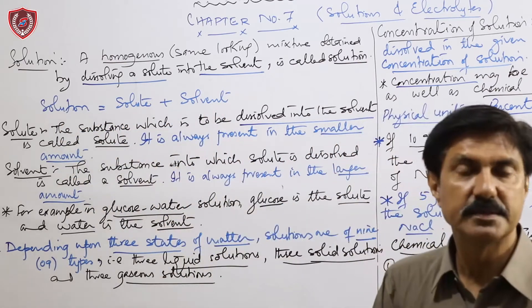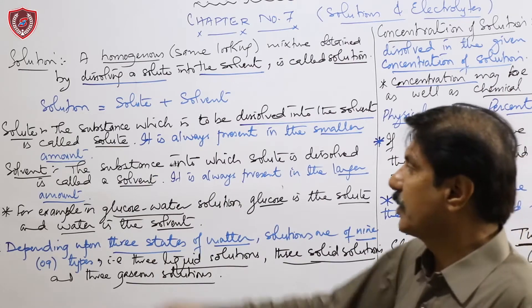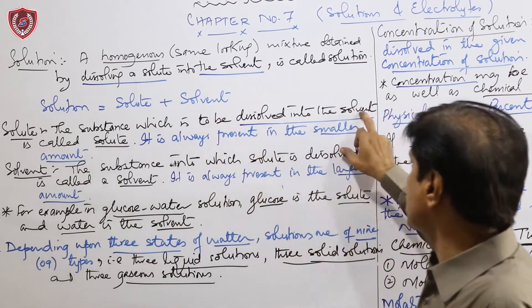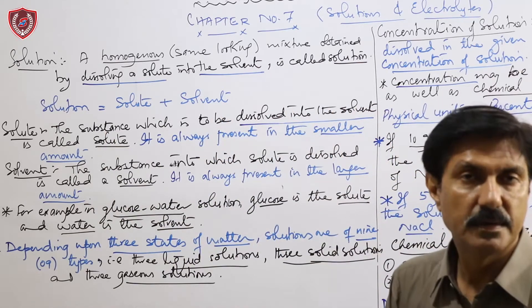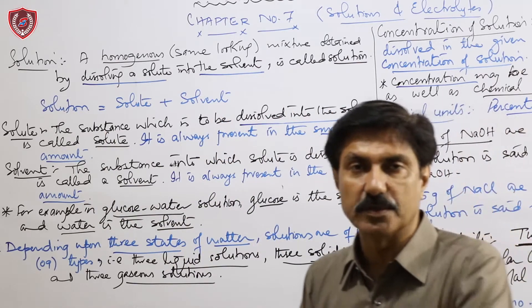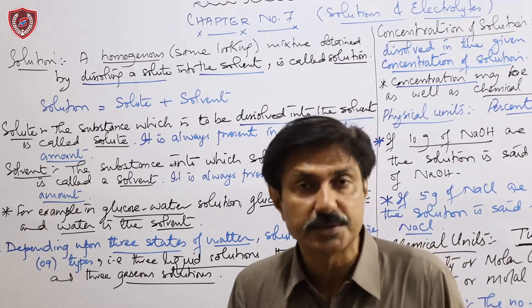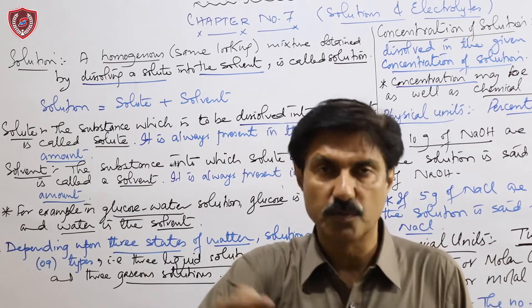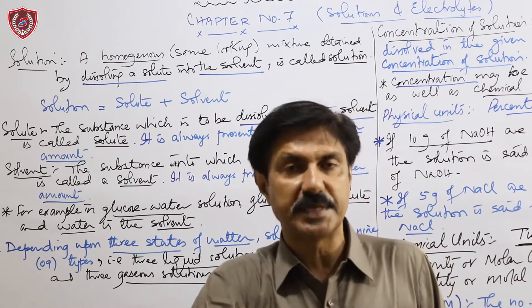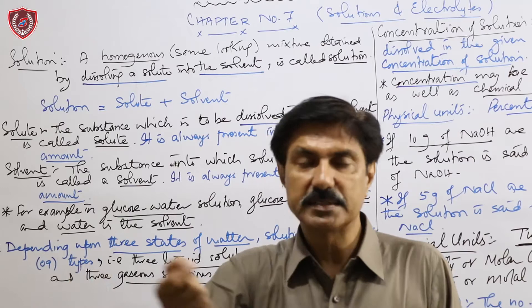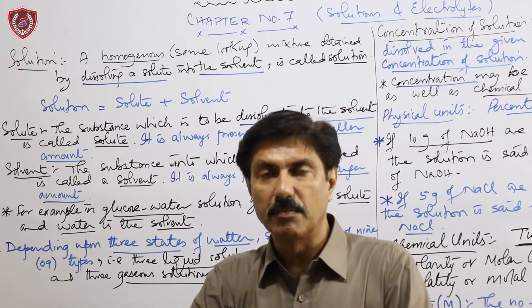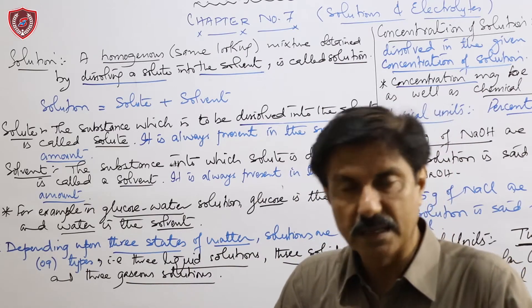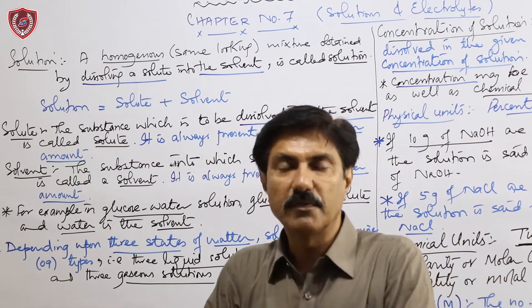Mathematically: solution = solute + solvent. Solute وہ چیز ہے جس کو آپ نے solvent میں dissolve کیا ہے — the substance which is to be dissolved into the solvent is called a solute. مثال: ایک چمچ چینی، گلوکوز، Tang، یا نمک پانی میں ملا دیا — یہ چینی، نمک، گلوکوز، Tang آپ کے solute ہو گئے۔